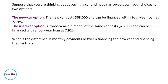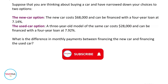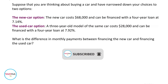Suppose that you are thinking about buying a car and have narrowed down your choices to two options. The new car costs $68,000 and can be financed with a four-year loan at 7.14%. The used car option, a three-year-old model of the same car, costs $28,000 and can be financed with a four-year loan at 7.92%. What is the difference in the monthly payments between financing the new car and financing the used car?